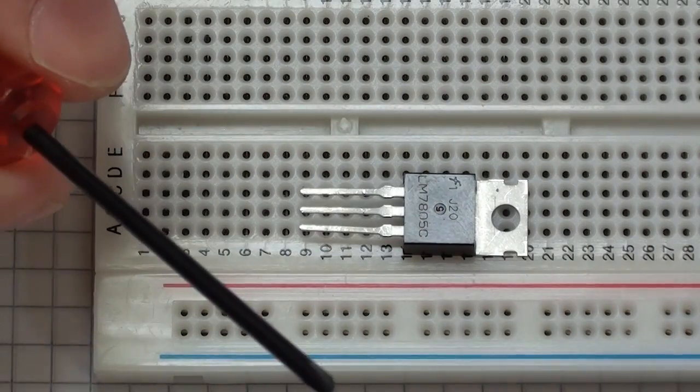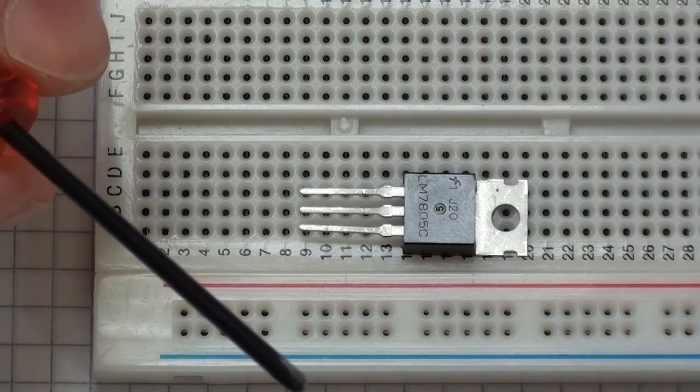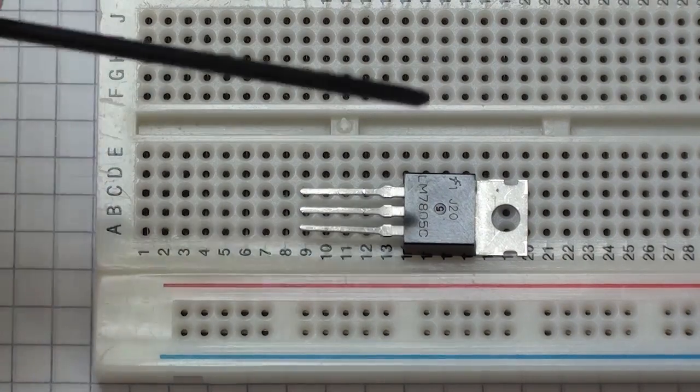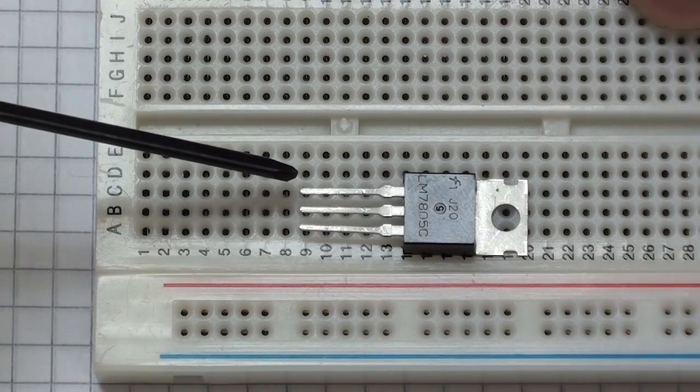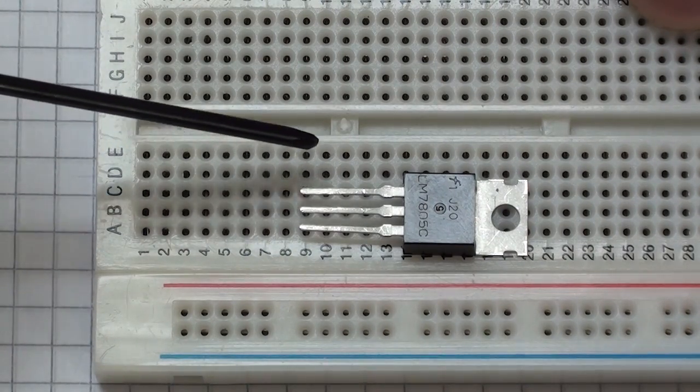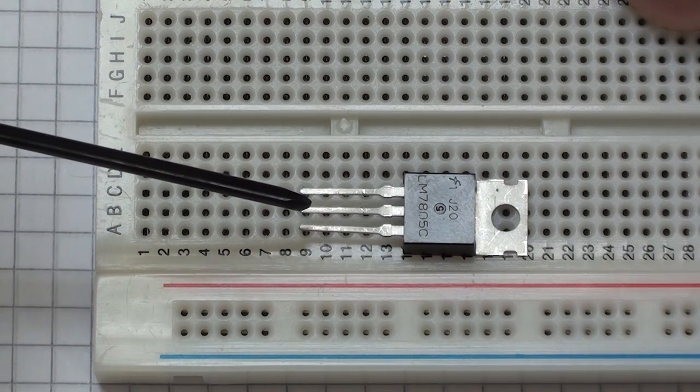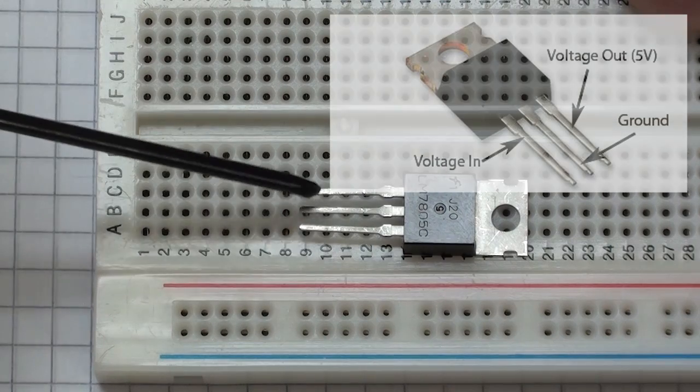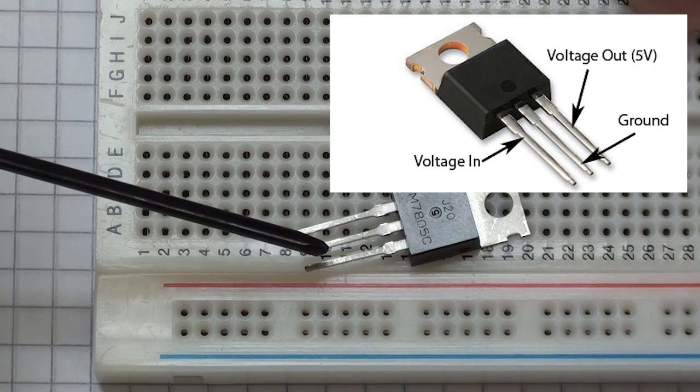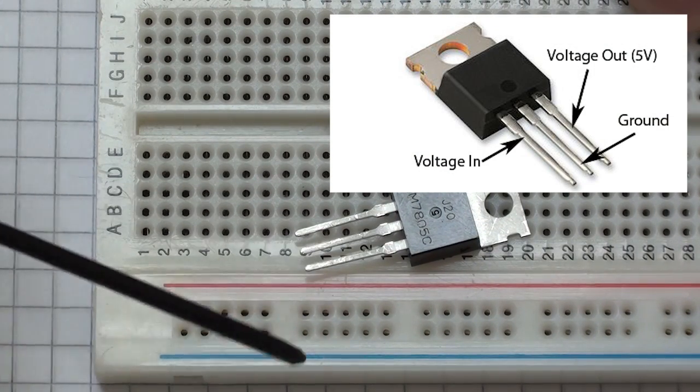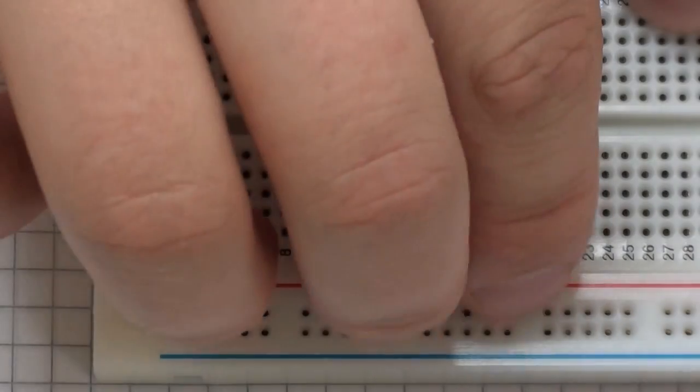This chip is organized so that the pins are as follows: this pin here, the leftmost pin, is our voltage in. The middle pin is our ground pin, and the rightmost pin here is our voltage out, our 5 volts supply out. So we're going to connect that up into our circuit.